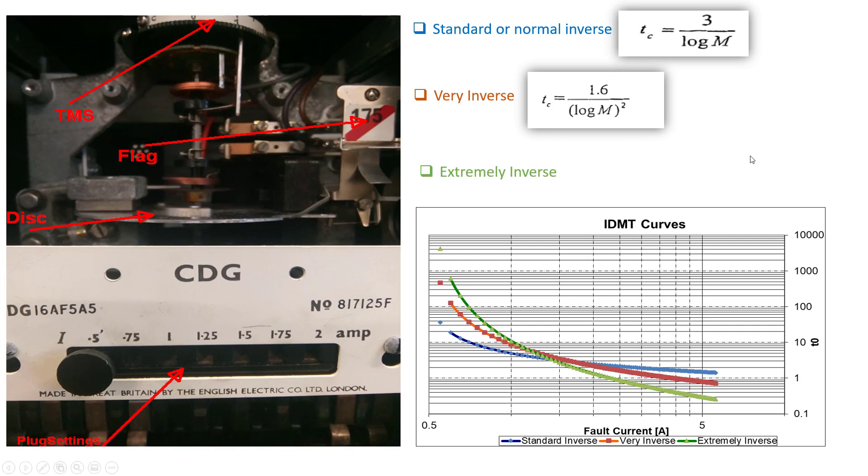Now the next one is the extremely inverse characteristics. The extremely inverse characteristics is also given with the same formula. But this time, the log M, which is M which stands for the multiple of setting current, is now raised to the cube instead of square on the very inverse. Now this characteristics is mostly used for relays that have to discriminate with fuses.